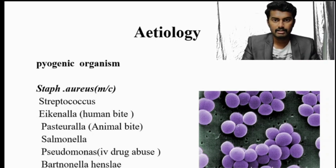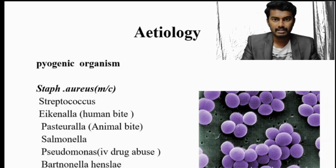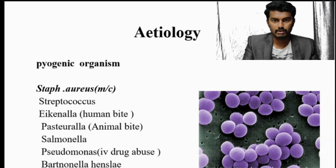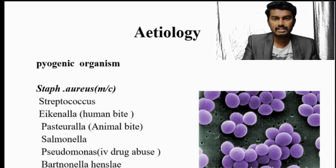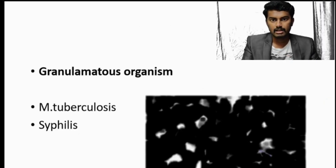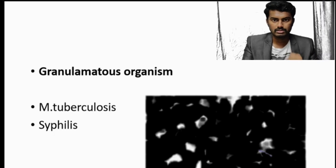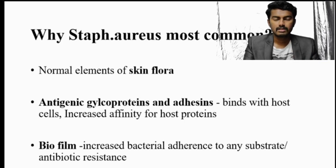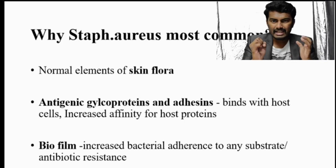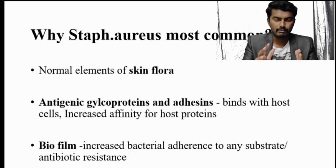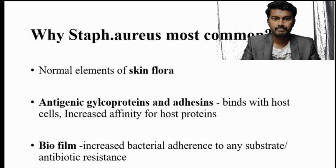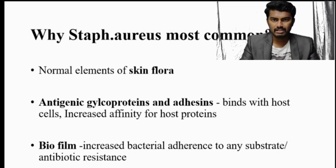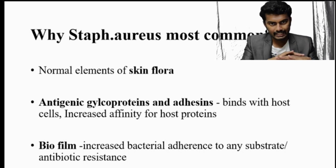According to the scenario: for a human bite, the organism is Eikenella; for an animal bite, it is Pasteurella; in case of IV drug abuse, it is Pseudomonas. For granulomatous organisms, Mycobacterium tuberculosis and syphilis can also cause osteomyelitis.